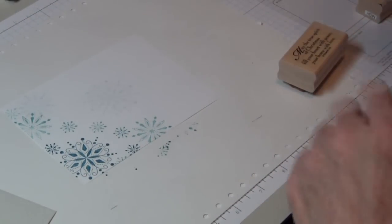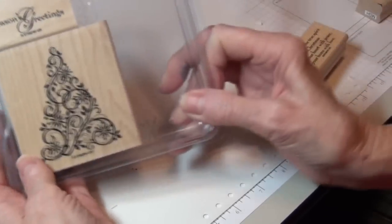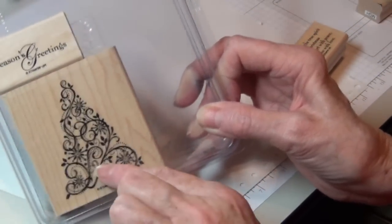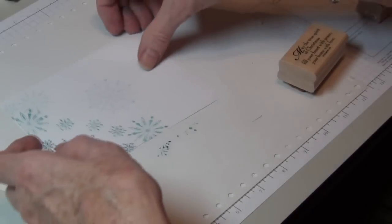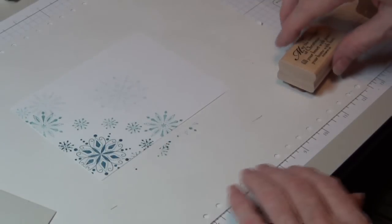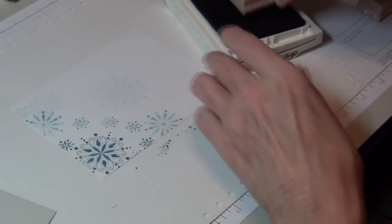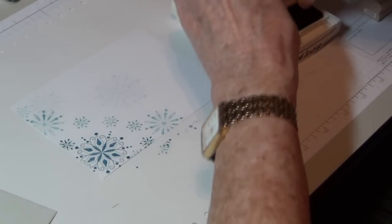I want to show you this set. This is an oldie but goodie, Snow Swirls, gorgeous set. I'm using this tree and verse and another card that I'm going to be teaching at Hobby Lobby. Oh, I wish y'all could come. We'd have a good time.